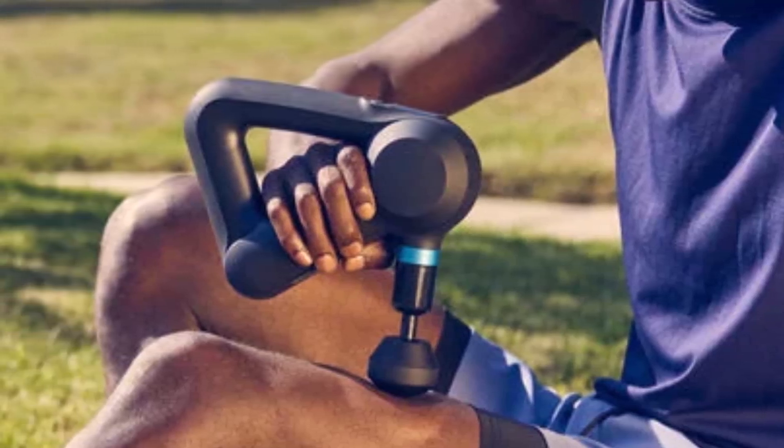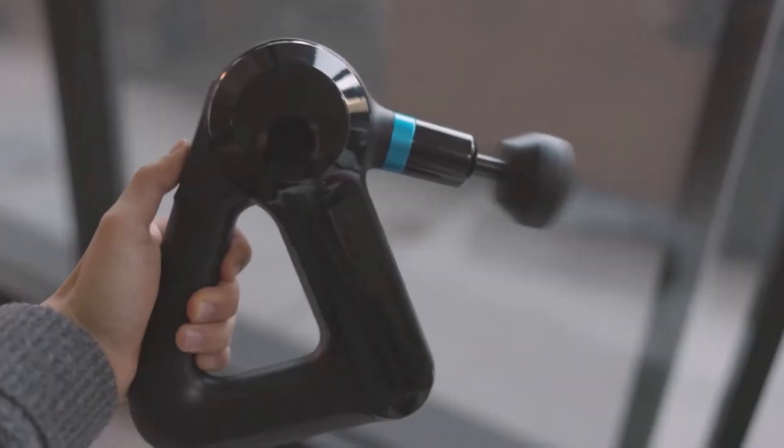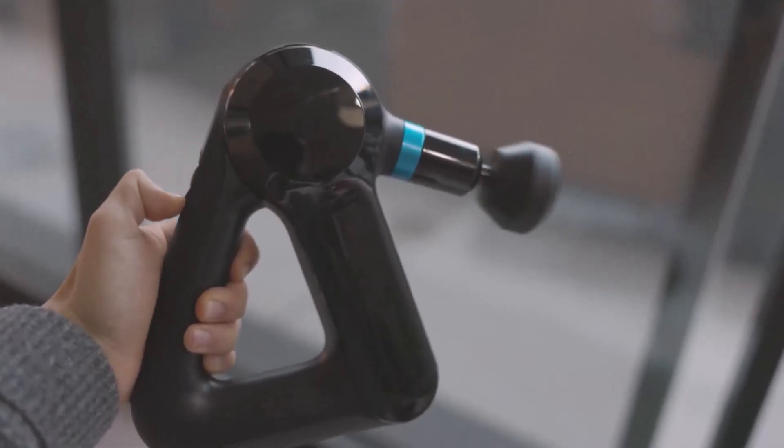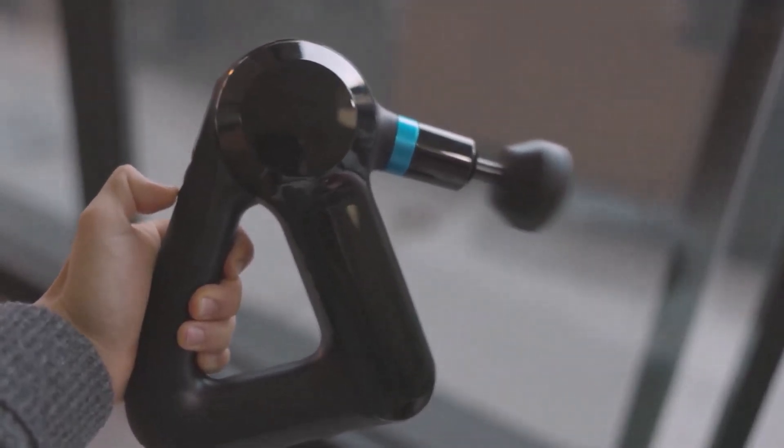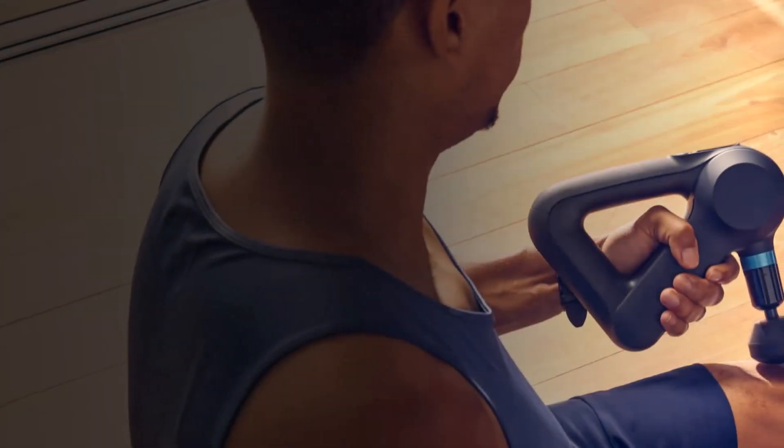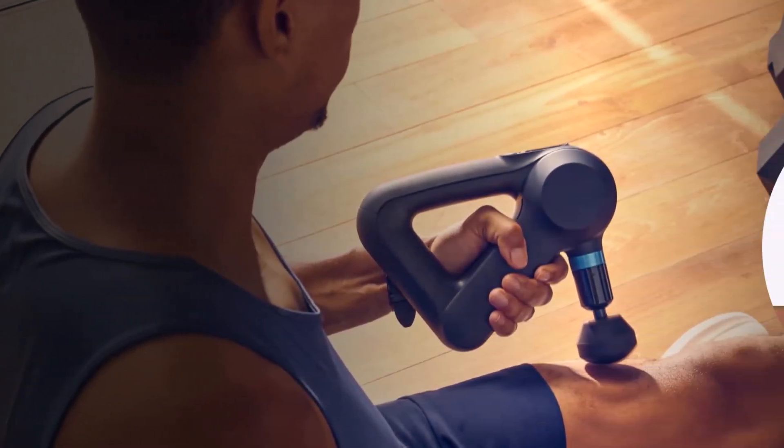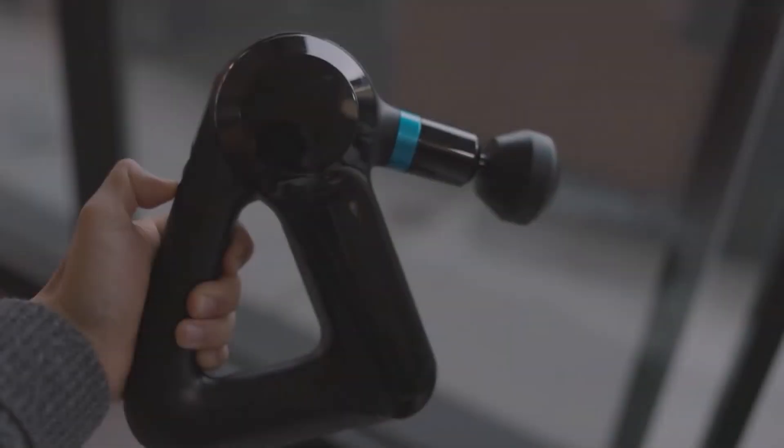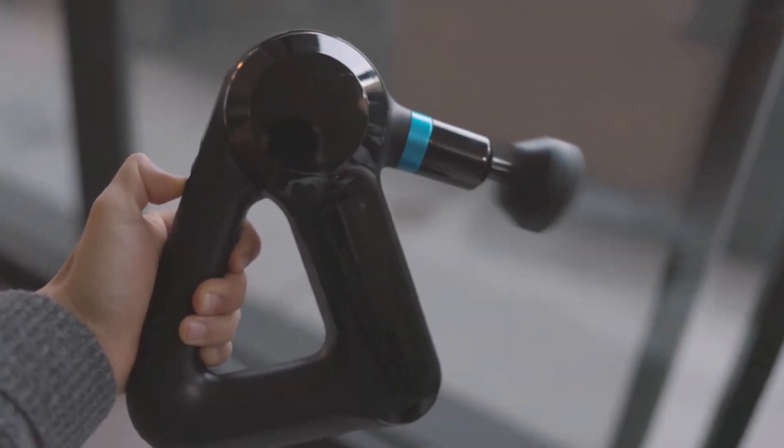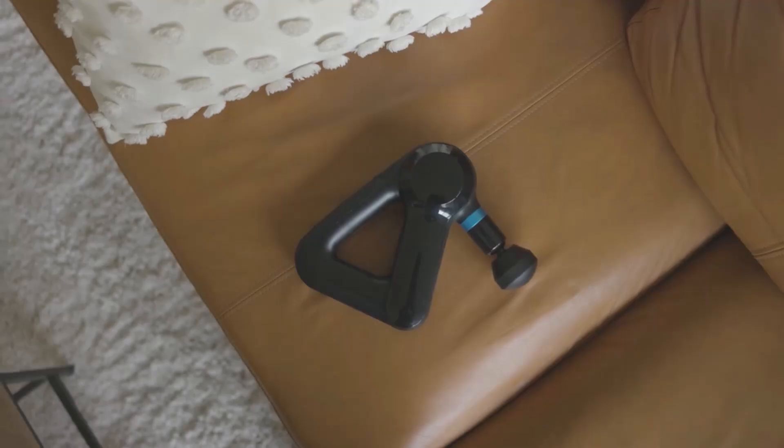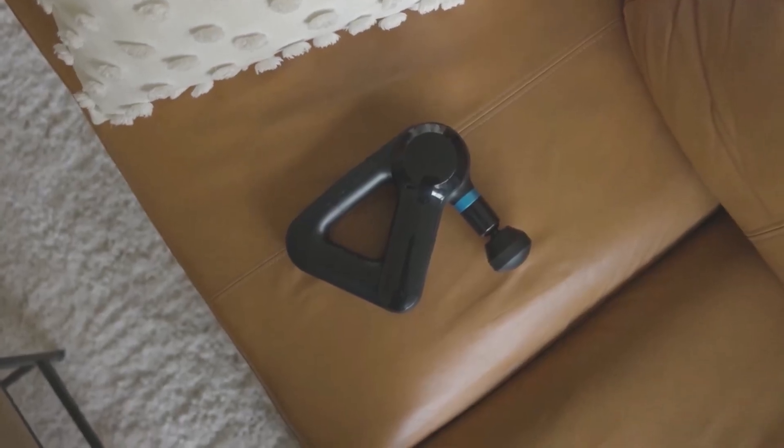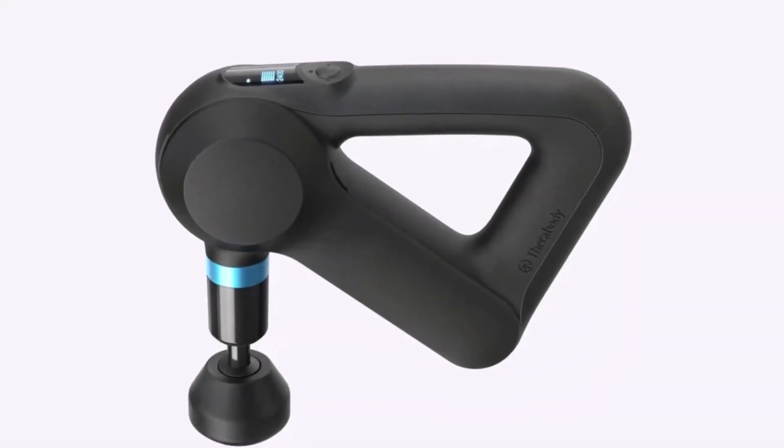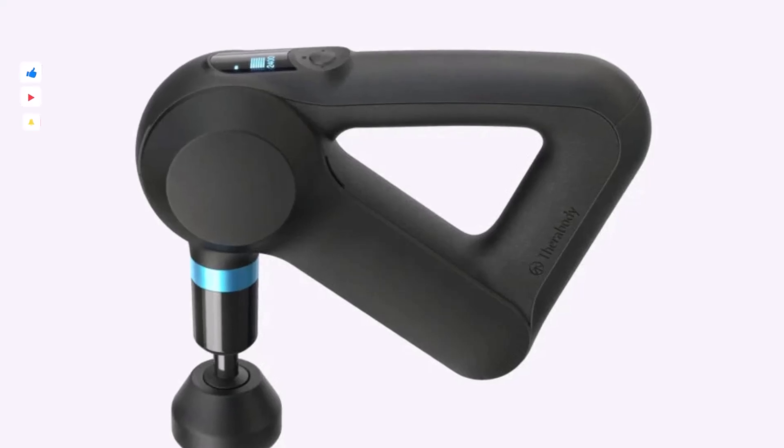Positioned between the Theragun Pro Gen 5 and Theragun Prime, it combines power with user-friendly features, making it suitable for both beginners and athletes. However, despite being marketed as one of Theragun's quieter models, it can still be somewhat loud at higher speeds. Its battery life is also shorter compared to other models. If you're looking for a reliable home-use massage gun, the Theragun Elite is a solid choice.